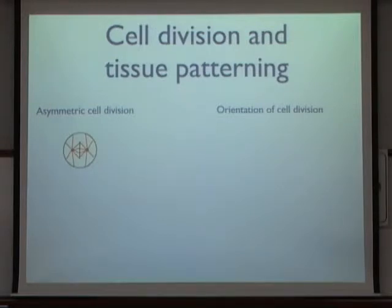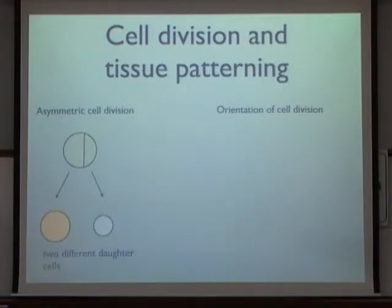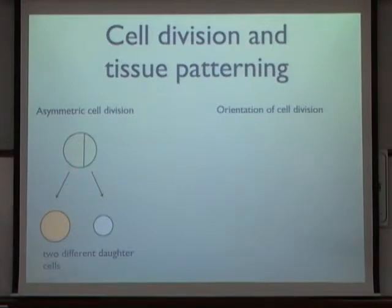One important example where the spindle determines the fate of daughter cells is asymmetric cell division, where an initially symmetric spindle somehow moves to an asymmetric position, divides the cell asymmetrically, and as a consequence the two daughter cells are different — for example, having different sizes but also different properties. This process involves displacement of the spindle, which is key to dividing cells asymmetrically in the appropriate way.